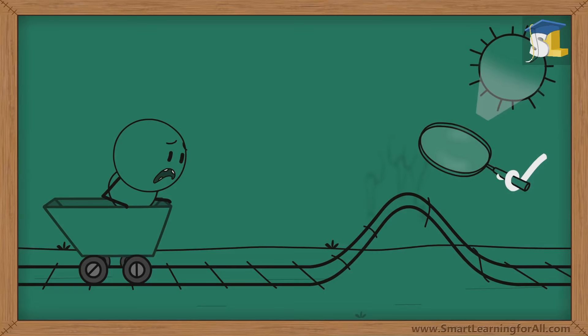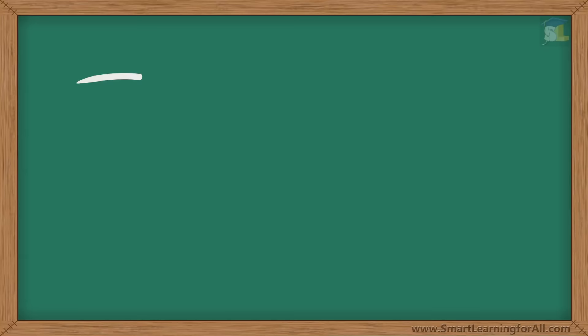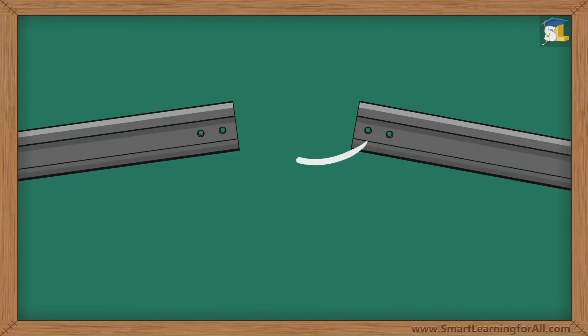Do you think that the rails bent because of thermal expansion? If yes, then you are absolutely correct. A railway track is made up of a number of rails joined to each other. These rails are usually made up of steel. Steel expands on heating and contracts on cooling.